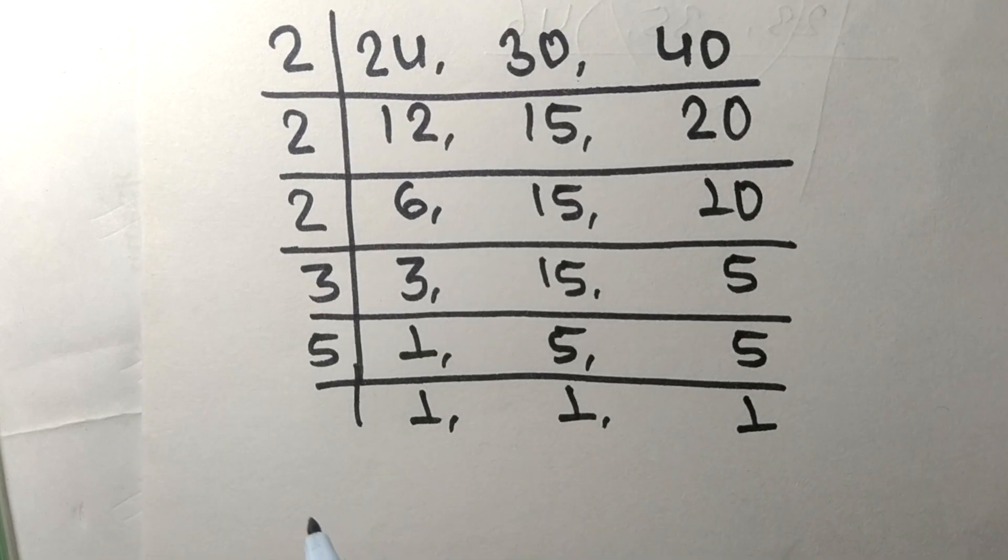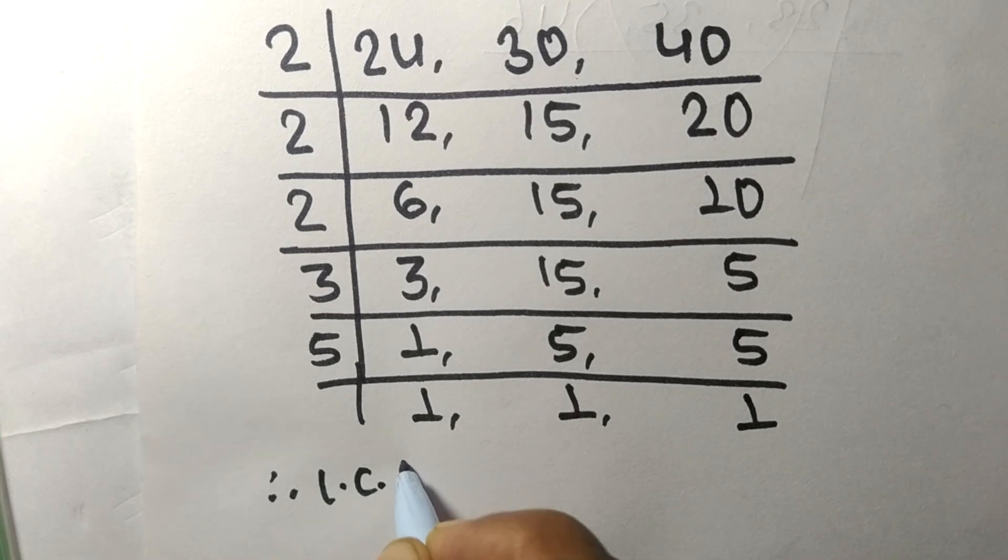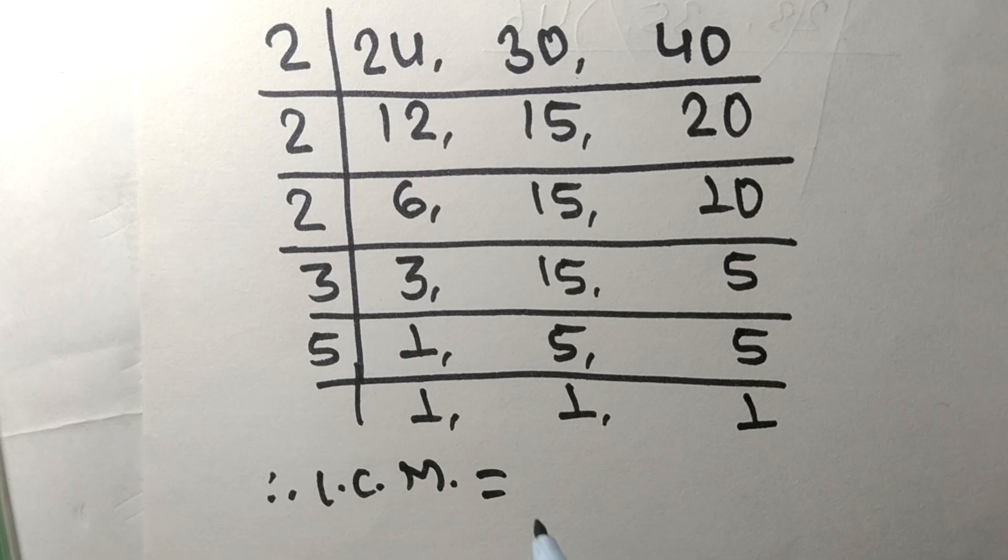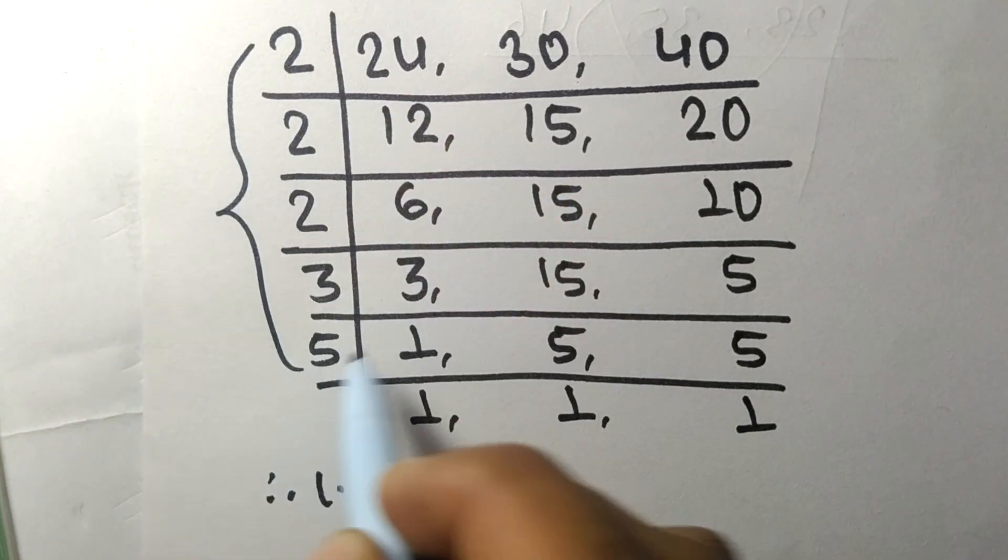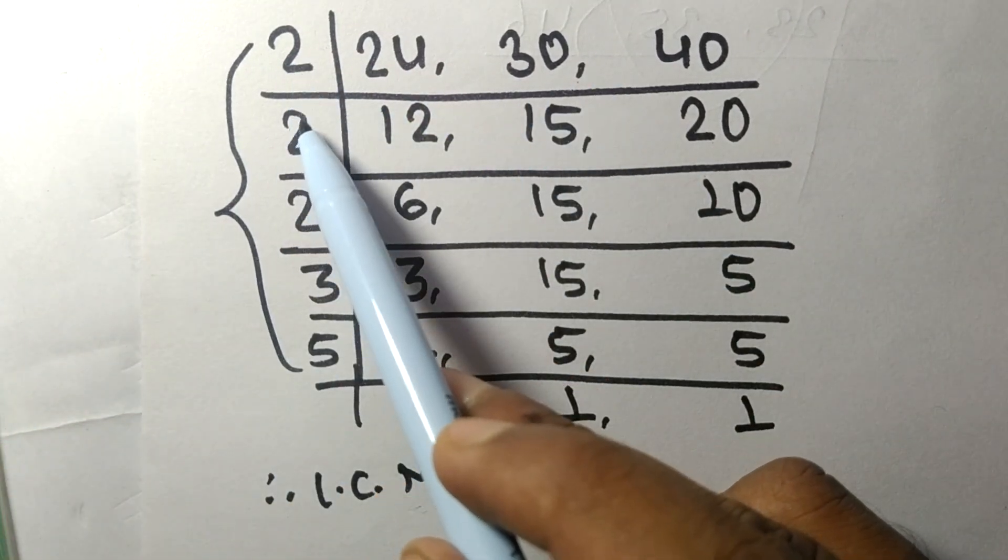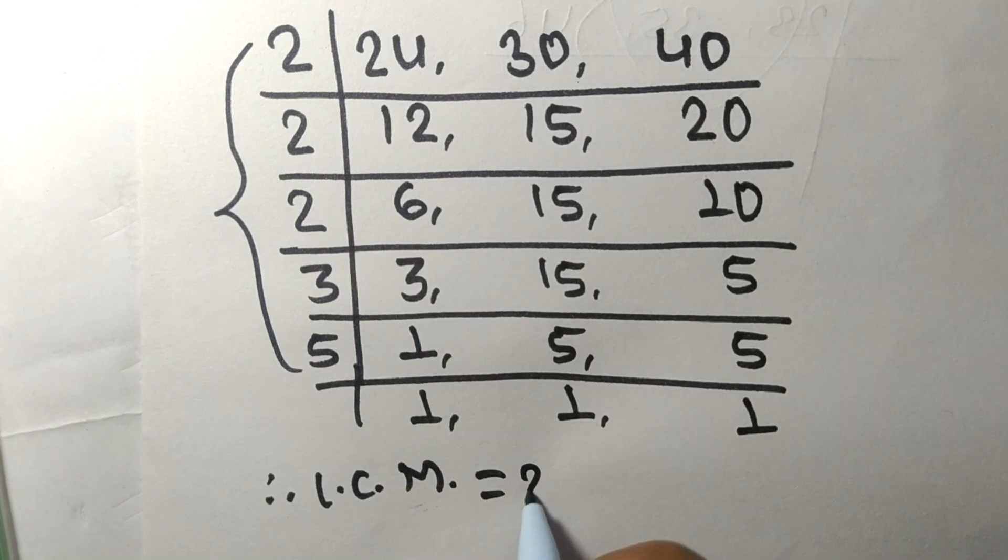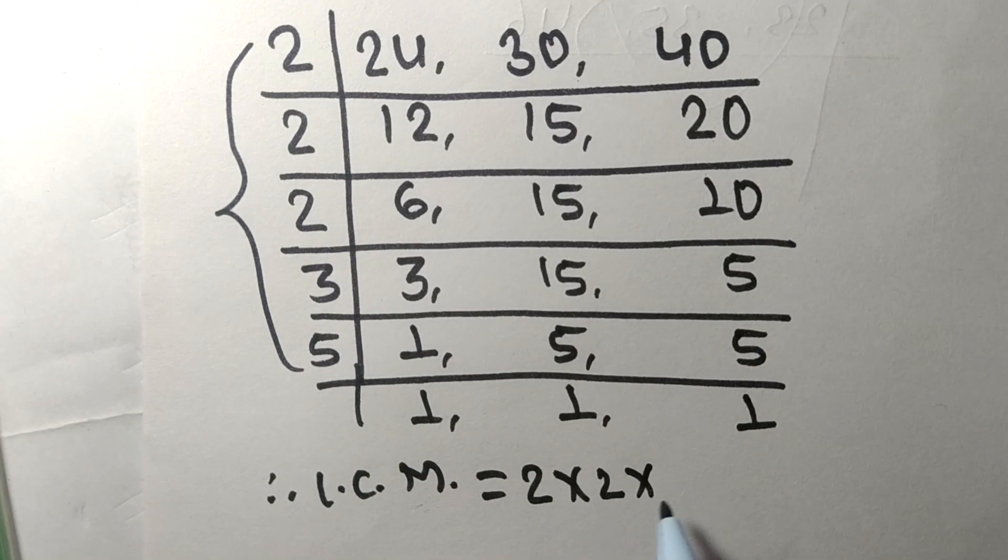So the LCM is equal to the product of these divisors: 2, 2, 2, 3, and 5.